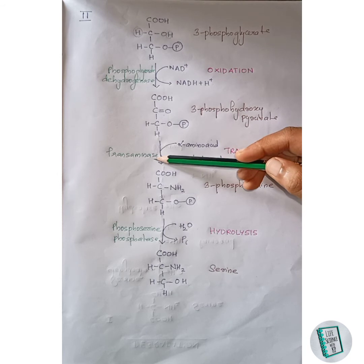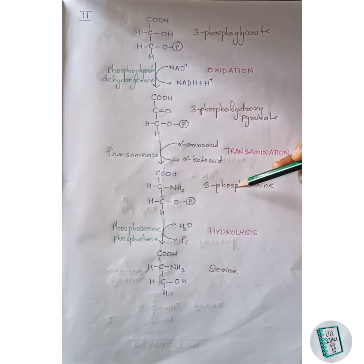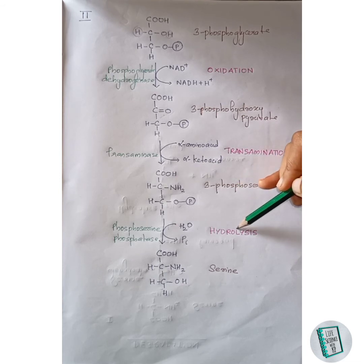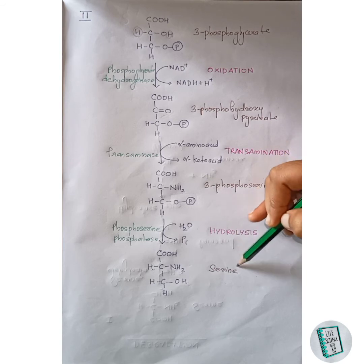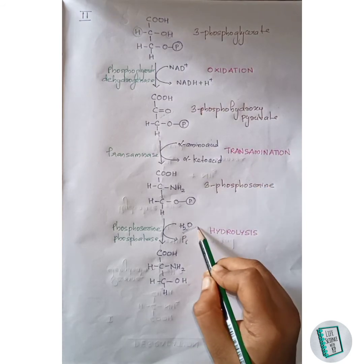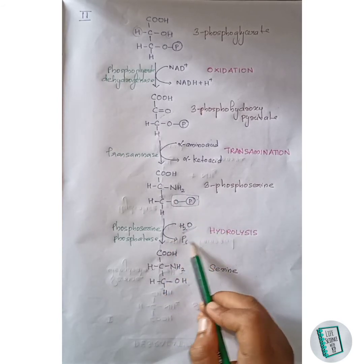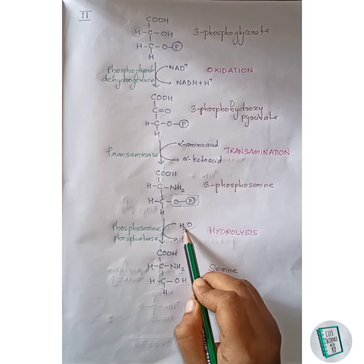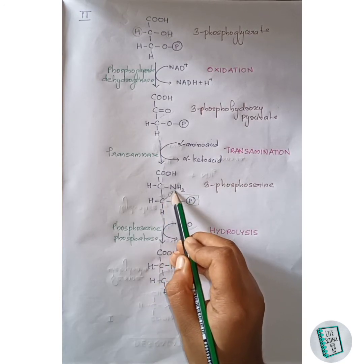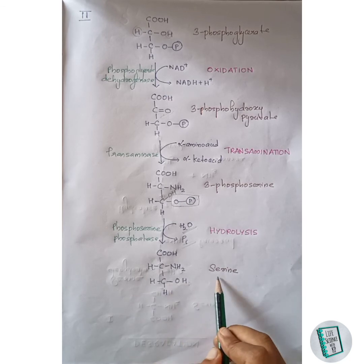This 3-phosphohydroxypyruvate then undergoes transamination to form 3-phosphoserine, in the presence of transaminase enzyme. The keto group changes to an amino group to form 3-phosphoserine. This 3-phosphoserine then undergoes hydrolysis in the presence of water to form serine. One hydrogen of the water molecule leaves with the phosphate group as inorganic phosphate, and the remaining OH group attaches to this carbon to form a C–OH bond, giving serine. This is the second pathway for the synthesis of serine.